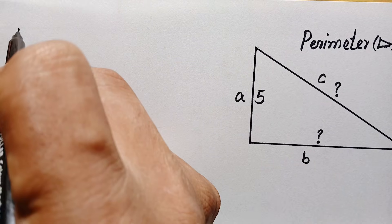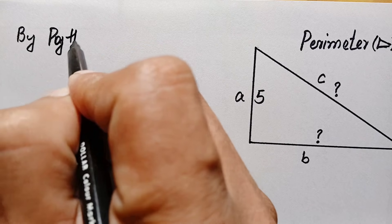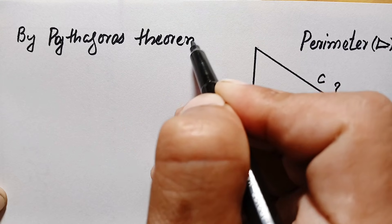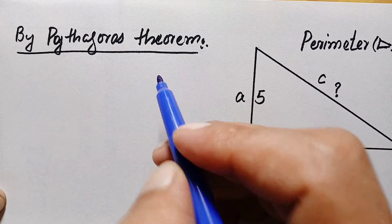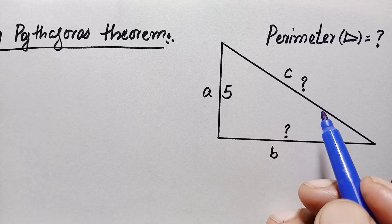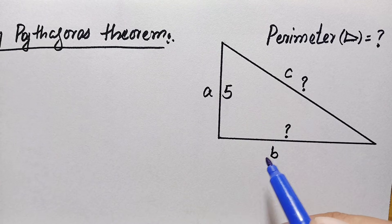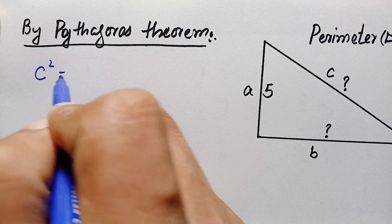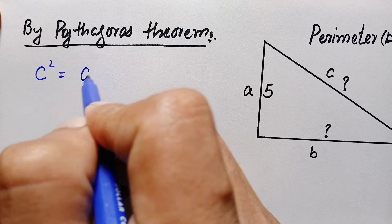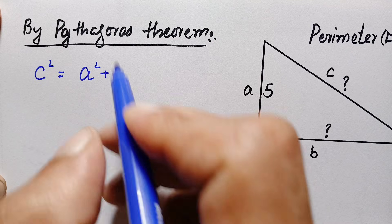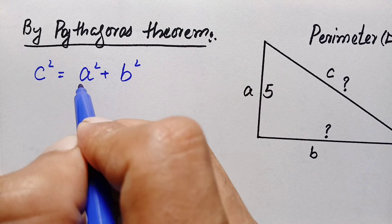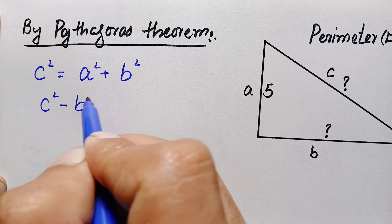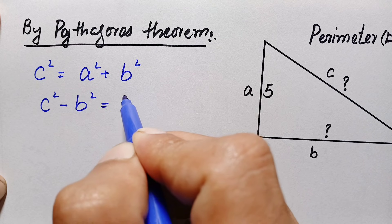By the Pythagorean theorem, the square of the hypotenuse equals perpendicular squared plus base squared. From this figure, the hypotenuse is c, so it becomes c² = a² + b². The width of the perpendicular a is given as 5, so this becomes c² - b² = 5² = 25.